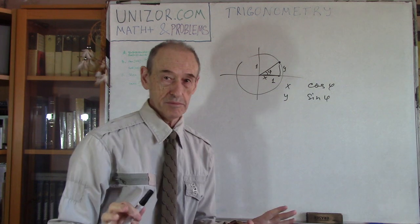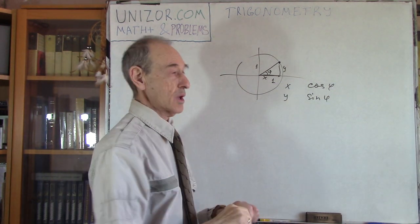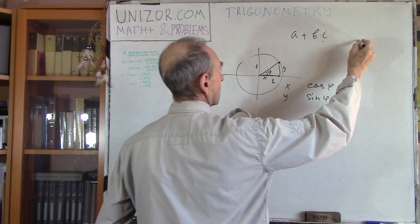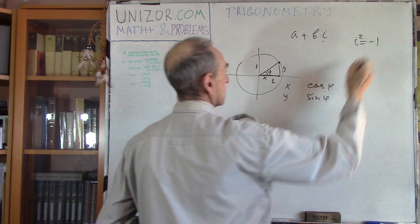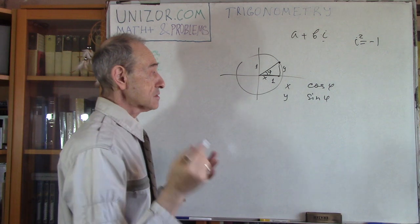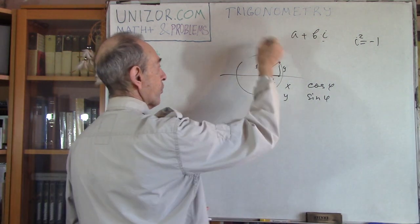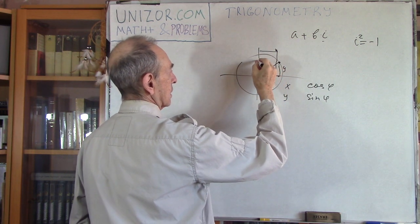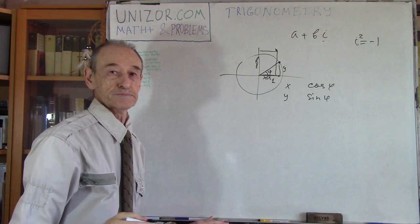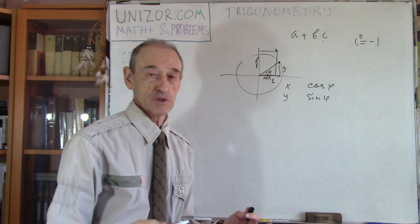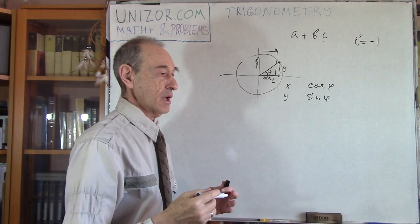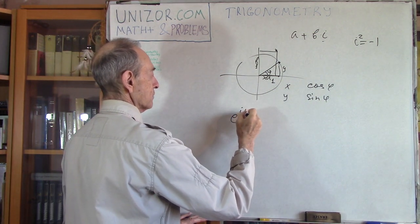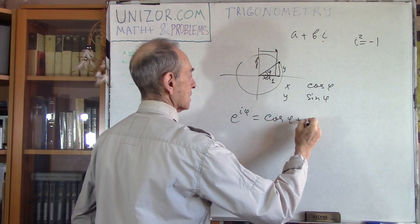At the same time, complex numbers, which have real and imaginary parts — where i is the imaginary unit and i squared equals minus one — are also represented as a point on the plane, where a is the abscissa and b is the ordinate. So there is a relationship, and this relationship is perfectly represented by Euler's formula: e to the power i·phi equals cosine phi plus i·sine phi.